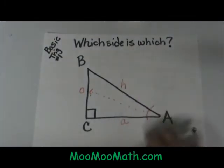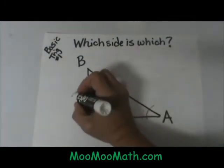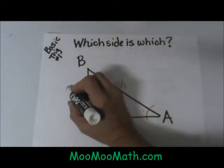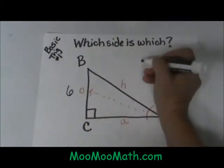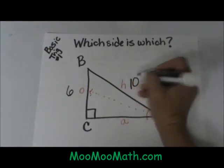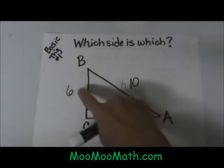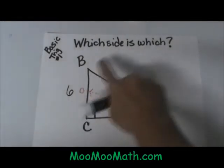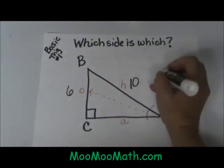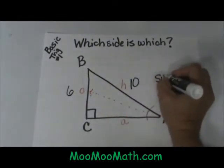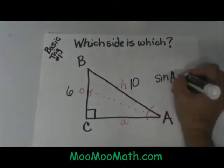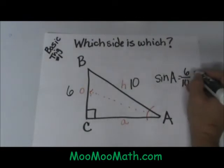Now let's give some measurements. Let's say the opposite side is 6 and the hypotenuse is 10. From this, my sine would be the opposite over the hypotenuse. So the sine of angle A would equal 6 over 10, which is my opposite over the hypotenuse.